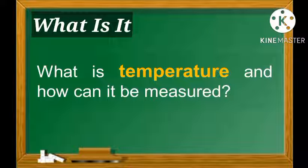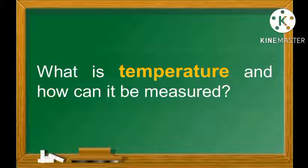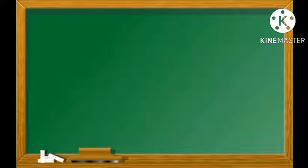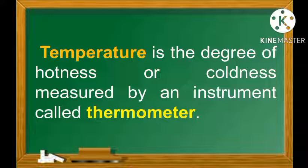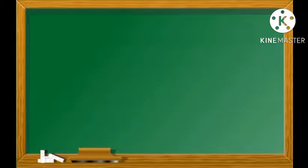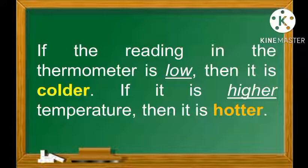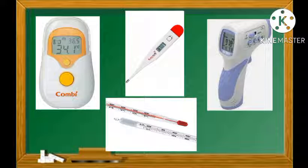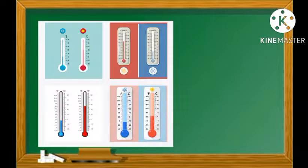What is temperature and how can it be measured? Temperature is a degree of hotness or coldness measured by an instrument called a thermometer. If the temperature reading on the thermometer is low, then it is colder. If it is a higher temperature, then it is hotter. There are several types of thermometer that can be used for various objects.